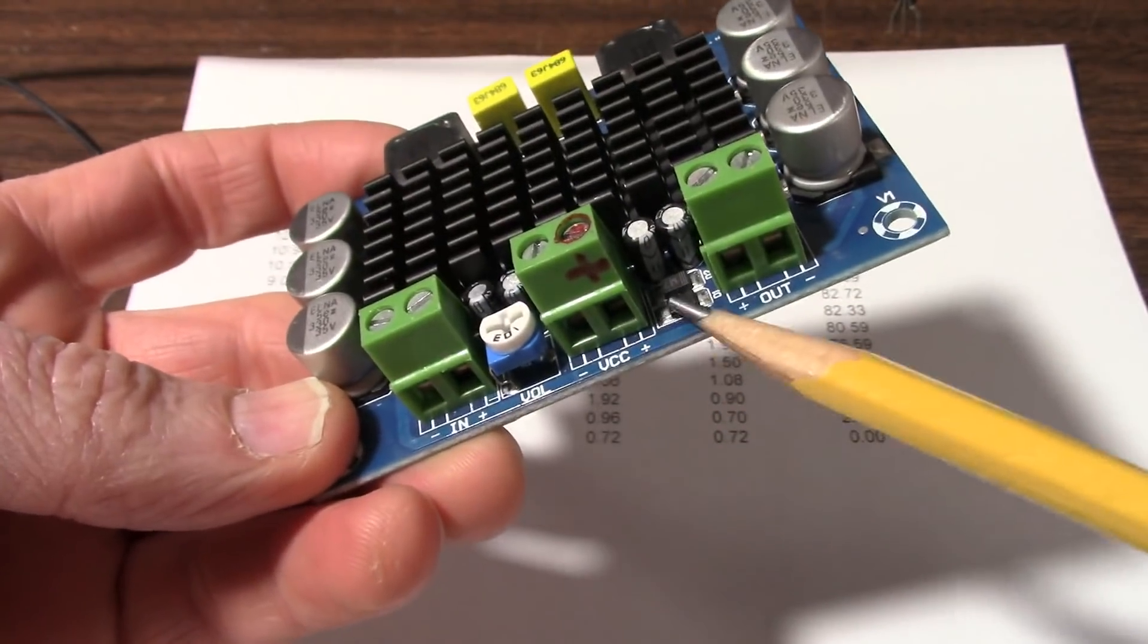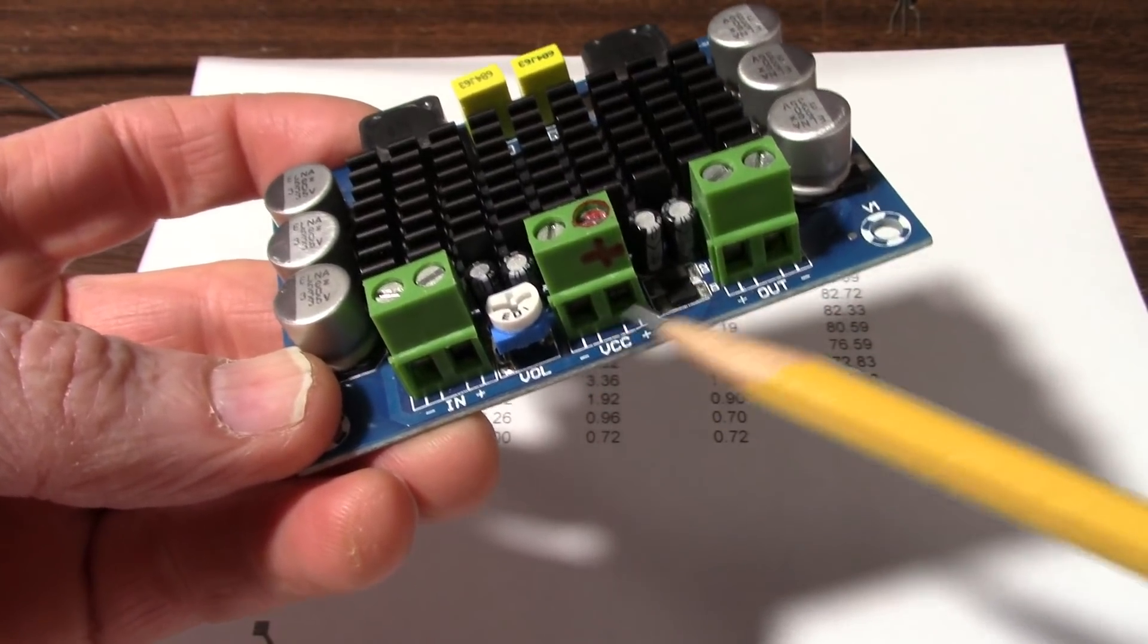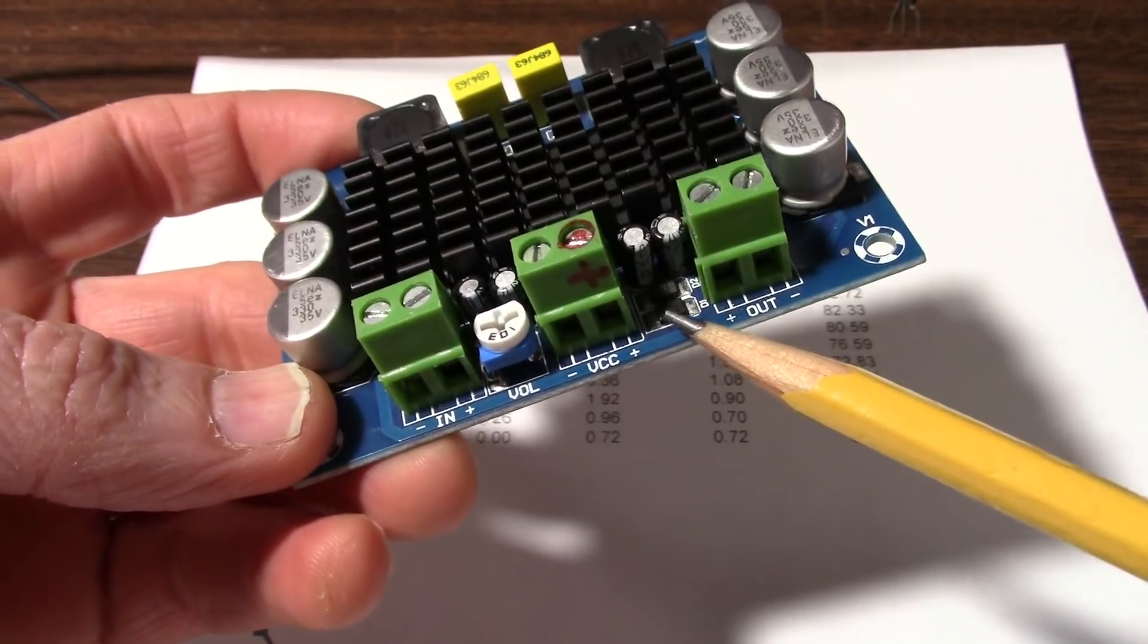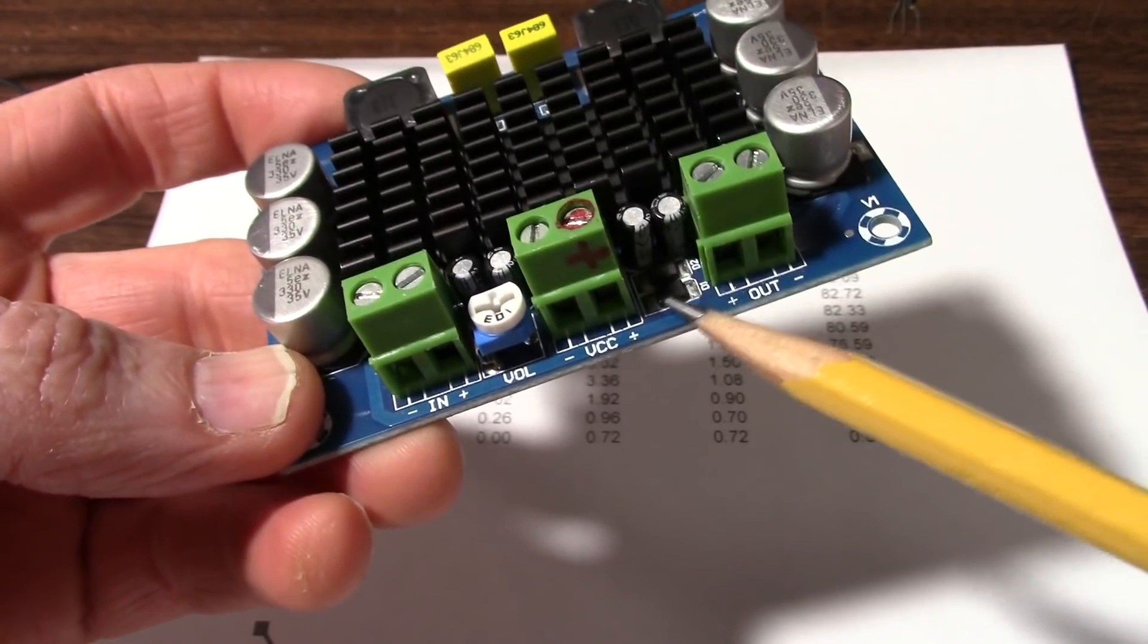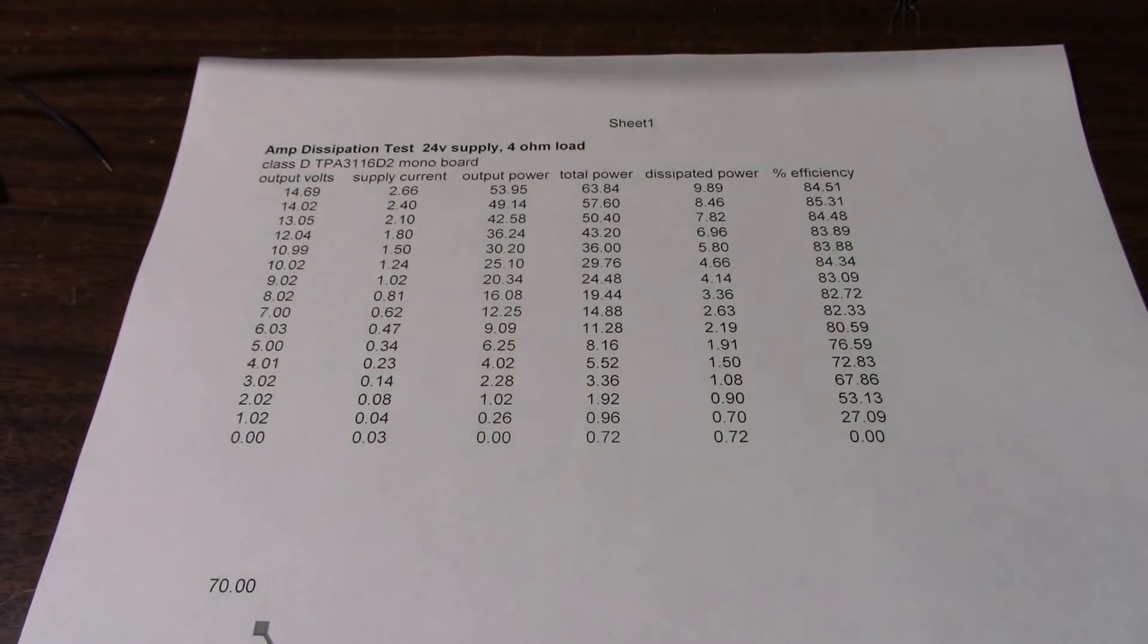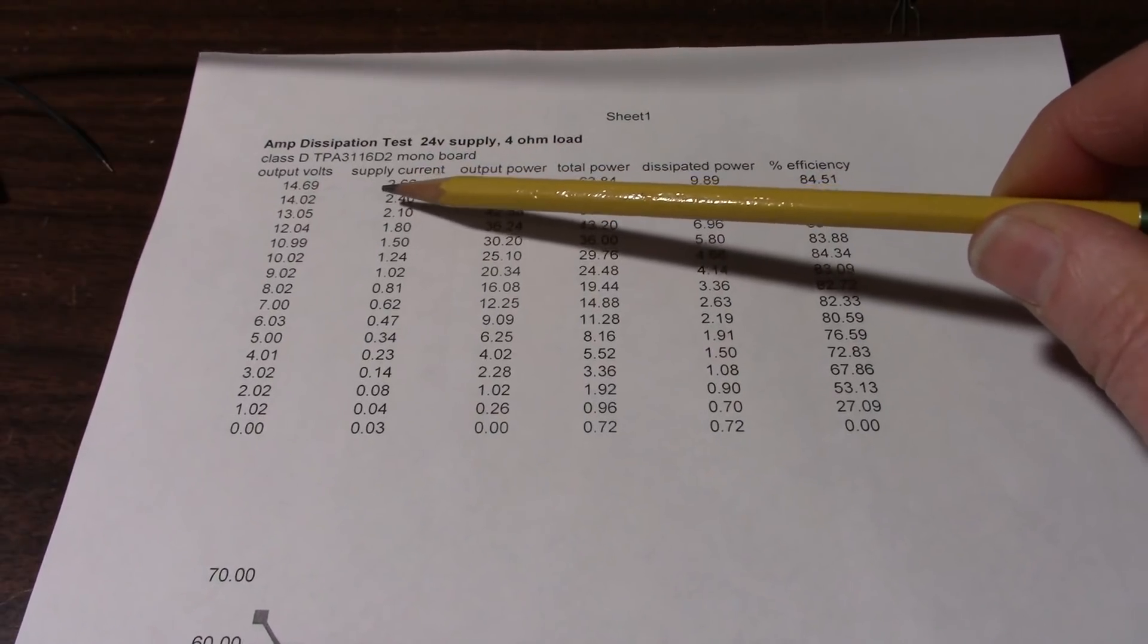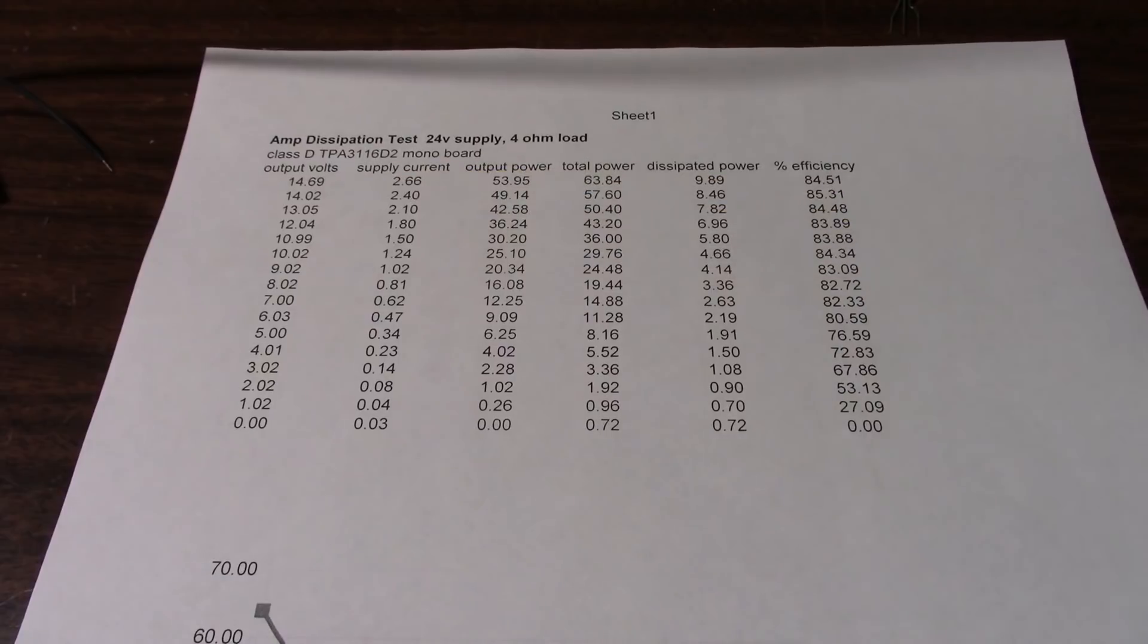Plus this board has these reverse protection diodes. So if you hook the supply up backwards, it won't blow up the chip. And the diodes have a forward voltage drop of 0.7 volts. They're silicon. And if you multiply that 0.7 times the supply current at the maximum clean output power, it's about 1.8 or 1.9 watts additional loss. So yeah, this number could be higher, but it's not too bad really.